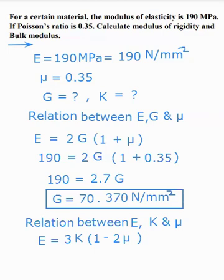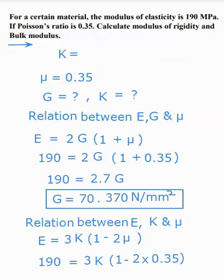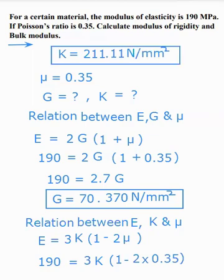So put all this value here. E is equal to 190 into 3K in bracket 1 minus 2 into mu, it is 0.35, bracket close. So write down, K is equal to 211.11 Newton per mm squared.